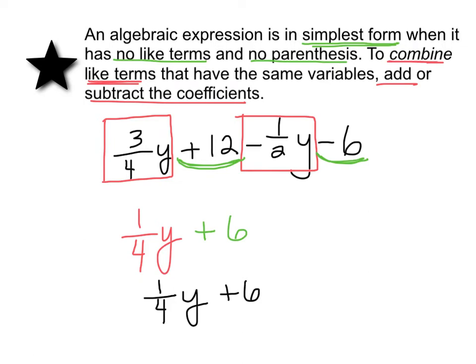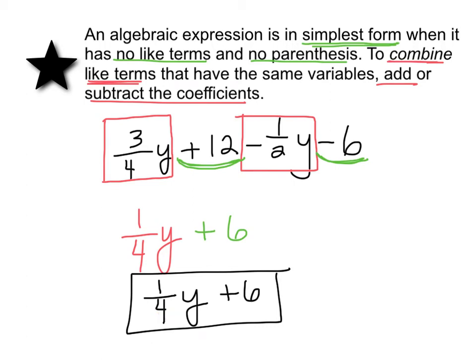I cannot add 1/4 y plus 6 together — these are not like terms. Why? Because 1/4 y has a variable and 6 does not. Therefore they do not have the same variable with the same power, so they are not like terms.